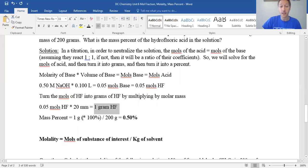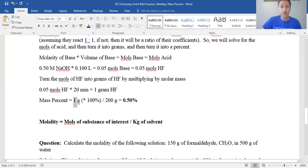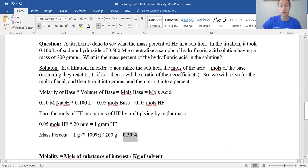To find this in terms of the mass percent, we have one gram divided by 200 times 100 percent to turn to percent form, and this is 0.5 percent. We just had this solution here. Our titration determined that the HF was 0.5 percent of the solution.